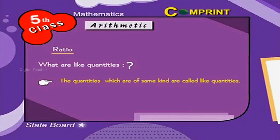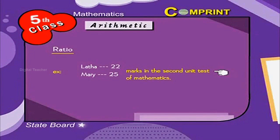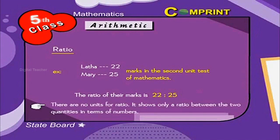For example, Lata and Mary got 22 and 25 marks in the second unit test of mathematics. The ratio of their marks is 22 is to 25. There are no units for ratio. It shows only a ratio between the two quantities in terms of numbers.